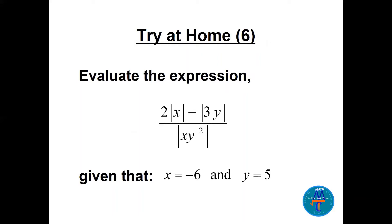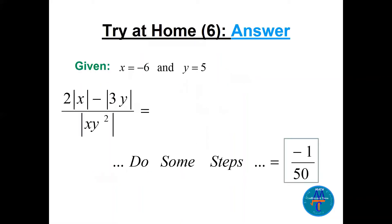Try at home number 6: evaluate the expression given x = −6 and y = 5. Just replace x = −6 and y = 5 inside the expression. Be careful in the denominator with xy² — the squared is on y only, not on x, because there is no bracket. The answer you should get is −1/50. For the full detailed solution, check the video on absolute value extra questions.